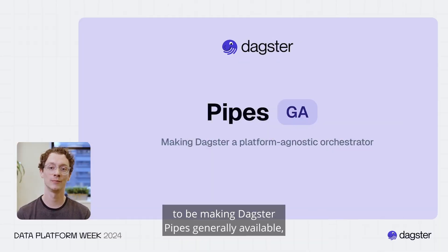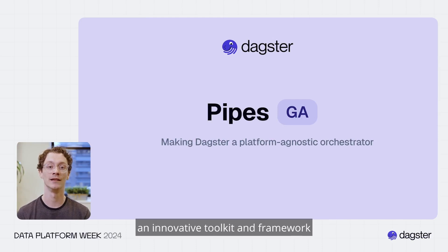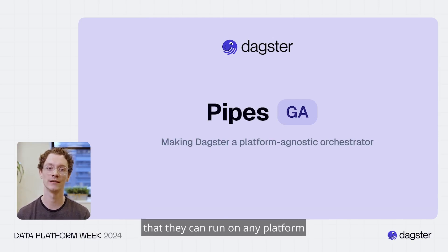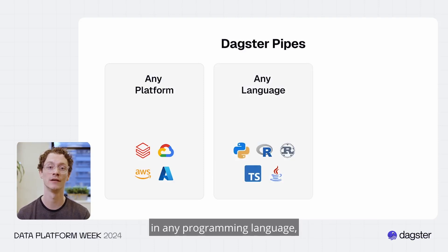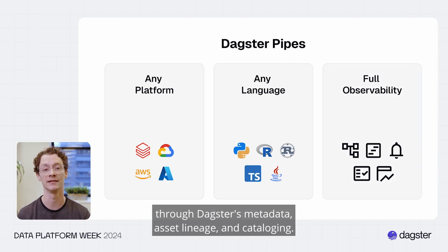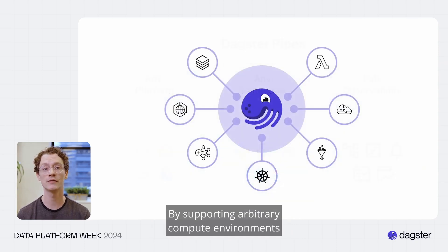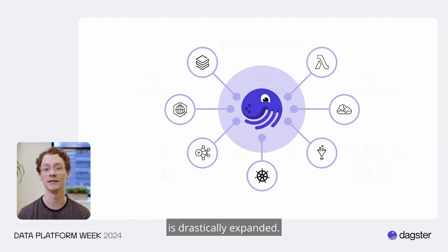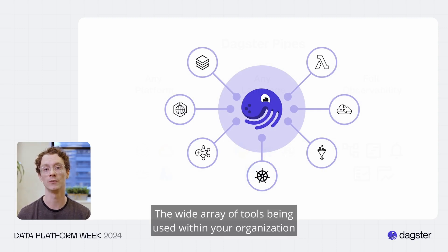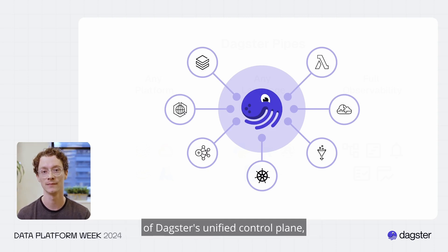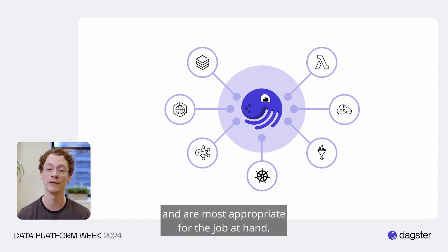We're thrilled to be making Daxter Pipes generally available — an innovative toolkit and framework that enables you to write your data pipelines so they can run on any platform in any programming language, while getting full observability through Daxter's metadata, asset lineage, and cataloging. By supporting arbitrary compute environments, the horizon of what can be done with Daxter is drastically expanded. The wide array of tools in your organization can now be brought under Daxter's unified control plane, and engineers can use the tools they most enjoy.